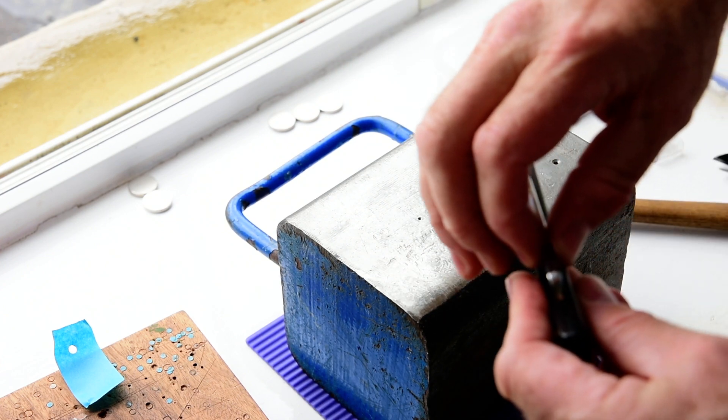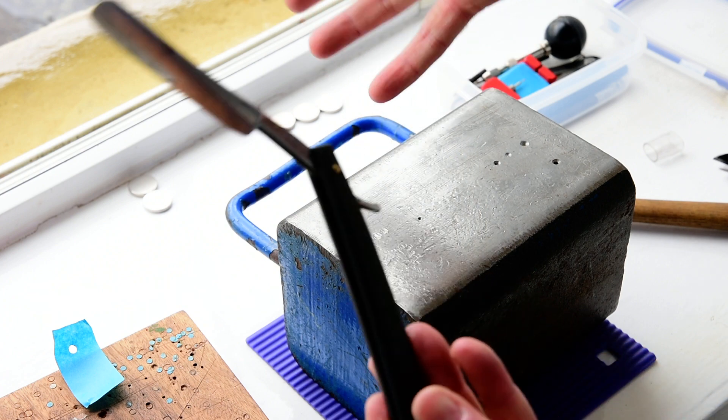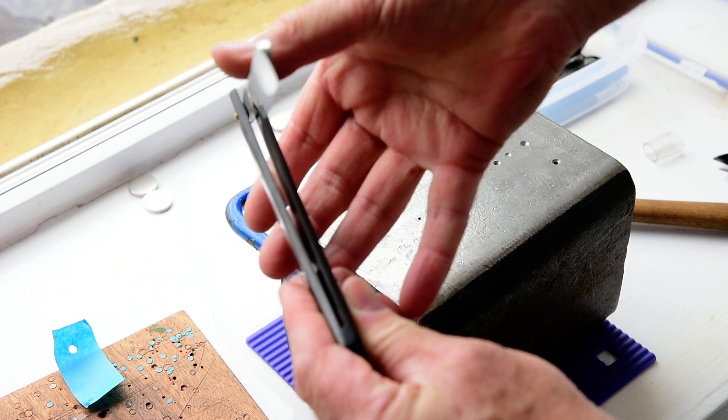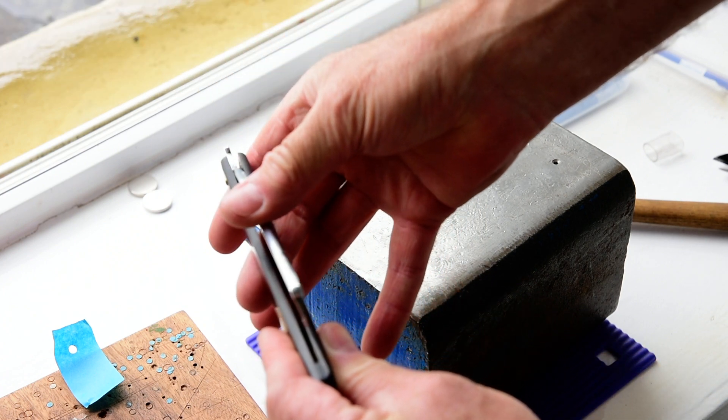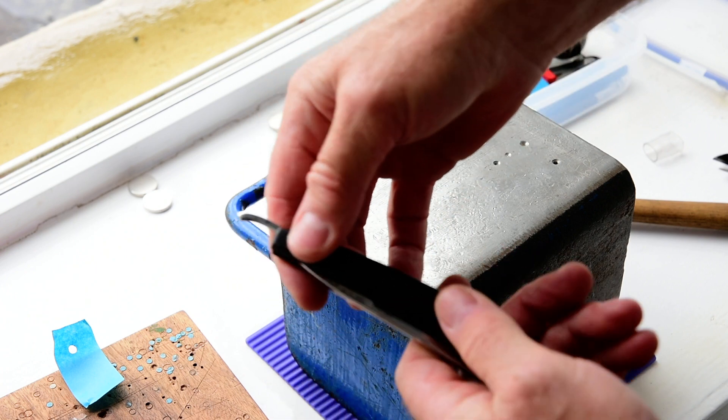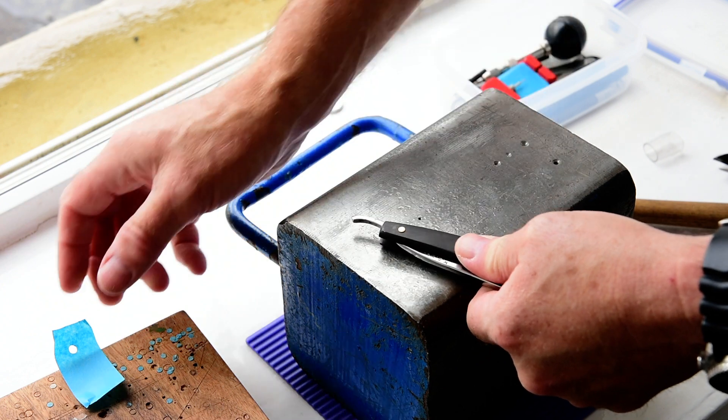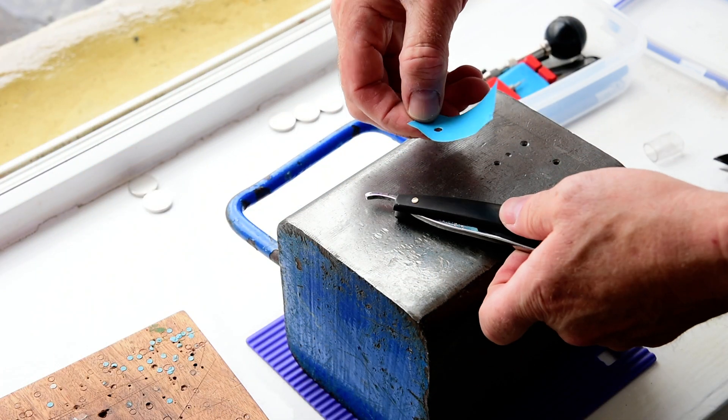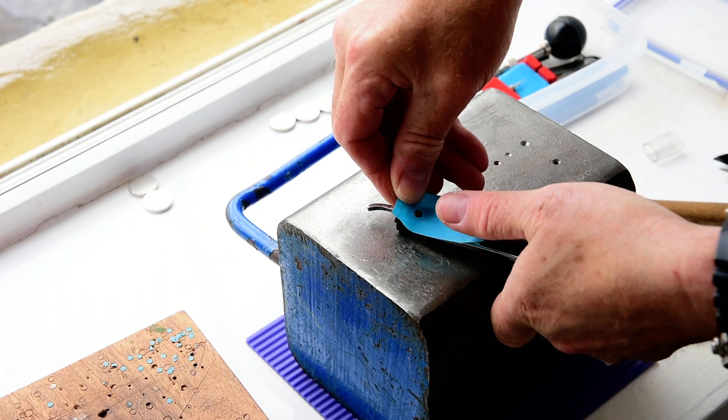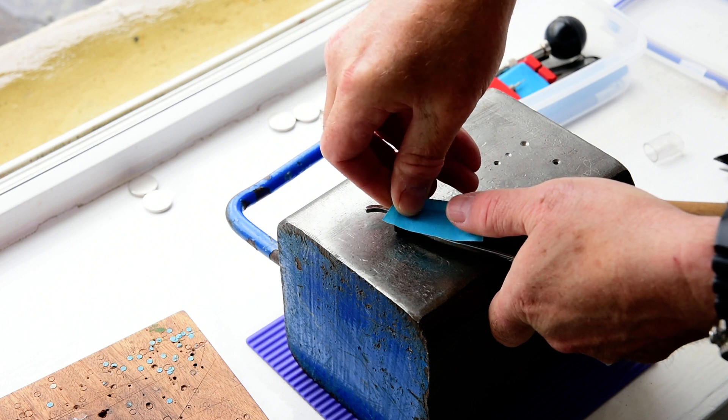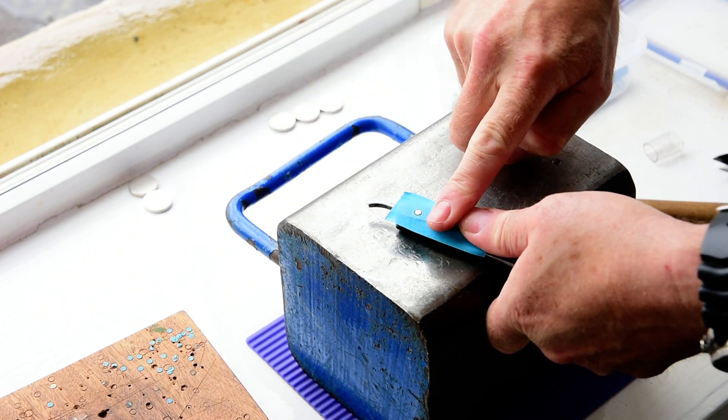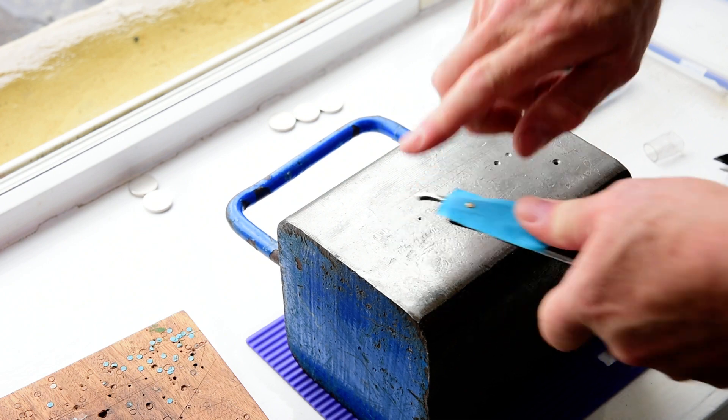There we are, razor uncentered perfectly. Right, I'm going to show you a quick way now to finish the pin heads. Get a piece of masking tape with the same size hole punched out. Cover the pin head so you're keeping the scales from being damaged while you're working it.